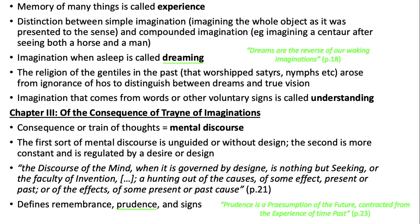There's a distinction between simple imagination — imagining the whole object as it was presented to the sense — and compounded imagination, which is imagining two things you've already sensed but putting them together; for example, imagining a centaur after seeing both a horse and a man. Imagination when asleep is called dreaming. He says that dreams are the reverse of our waking imaginations. The religion of the Gentiles in the past — those who worshipped satyrs and nymphs — arose from ignorance of how to distinguish between dreams and true vision.